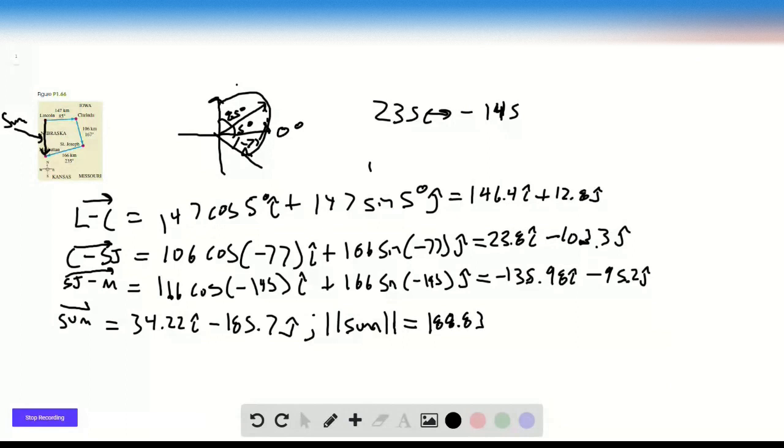All right, so basically, to get back, we want to do the exact opposite of this sum vector. So the exact opposite, I'll call our displacement vector to get back, is negative 34.22 i-hat plus 185.7 j-hat. Okay. The length is the same, the length is still 188.83, that's how far you have to go to get back.